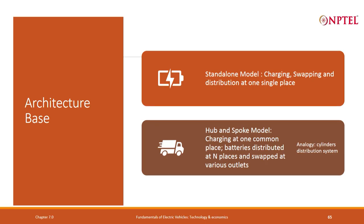When talking about swapping, there are two different types of architectures. One is the standalone model where the charging, swapping, and distribution happen at one single place. You imagine there is a swap station, you go there, there is a rack, a dispensing unit, and charging also happens at the same place.